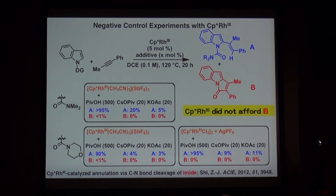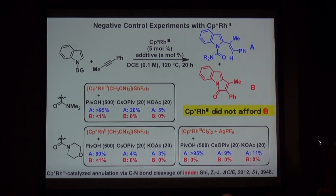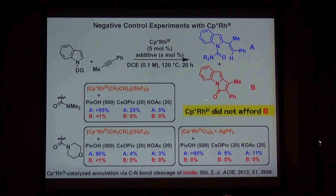This is a very important control experiment tried with rhodium catalyst. We tried a variety of catalysts and reaction conditions — with acid or base, with different directing groups — but we never observed the cyclized compound B with rhodium catalyst. So definitely, this reaction is specific to cobalt.